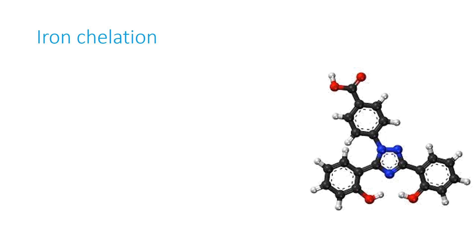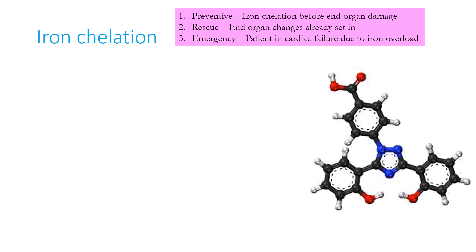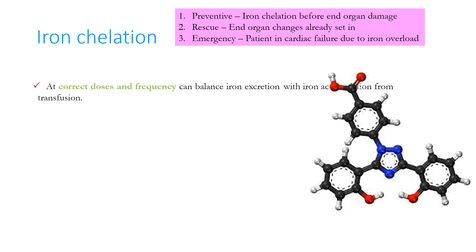Iron chelation therapy can be of three types: preventive therapy, where chelation is done before end organ damage; rescue therapy, when end organ damage has already set in; and emergency chelation therapy, when the patient is in cardiac failure due to iron overload and immediate reversal is needed. It should be initiated at correct doses and frequency to achieve a balance between iron excretion and accumulation. Response to chelation is dose and duration dependent, and is also affected by the rate of blood transfusion.